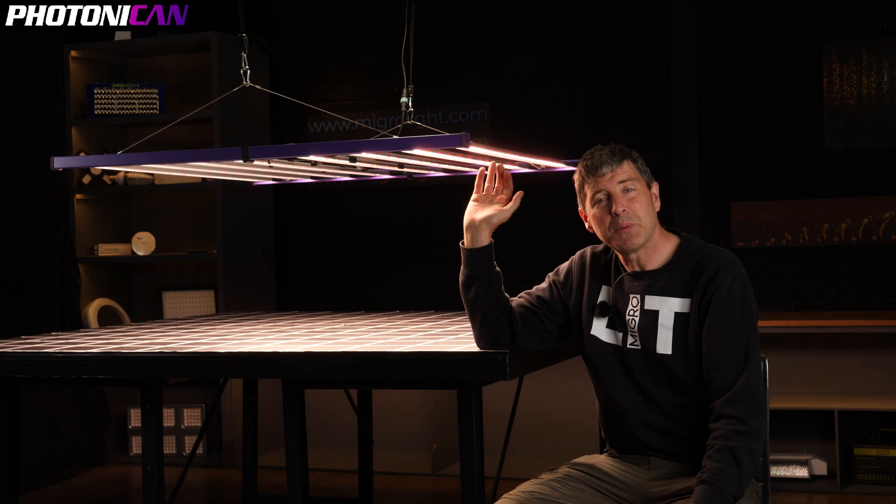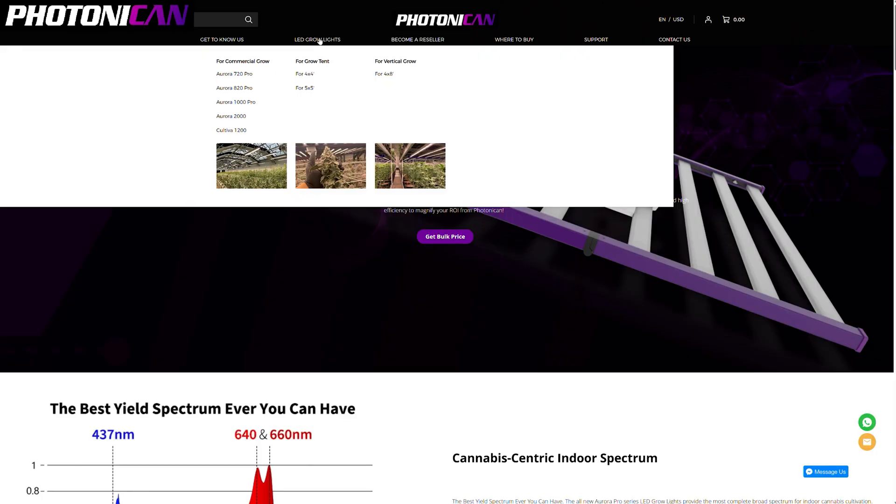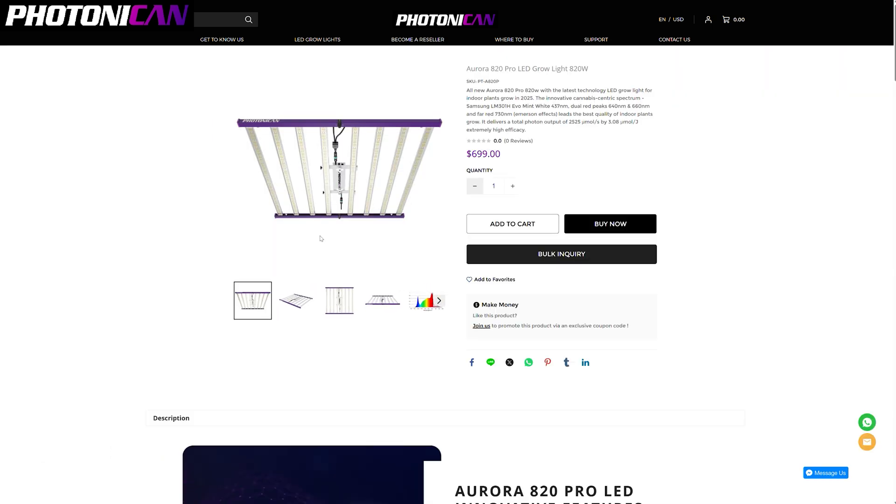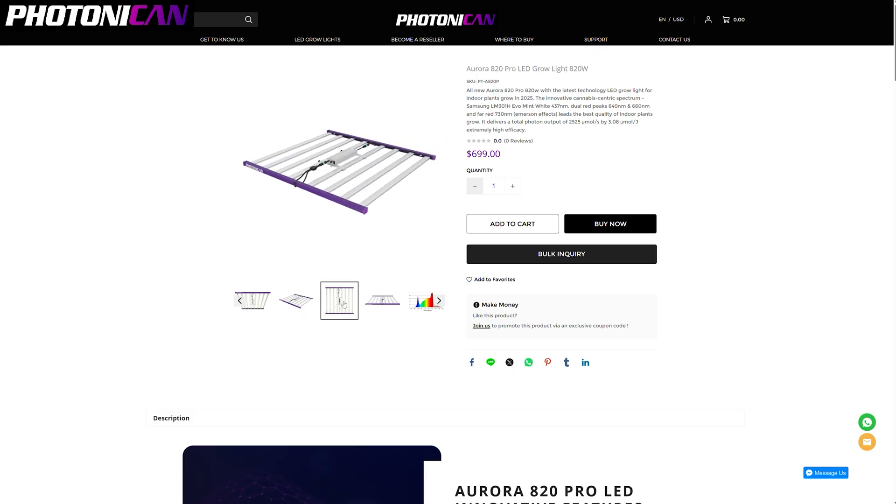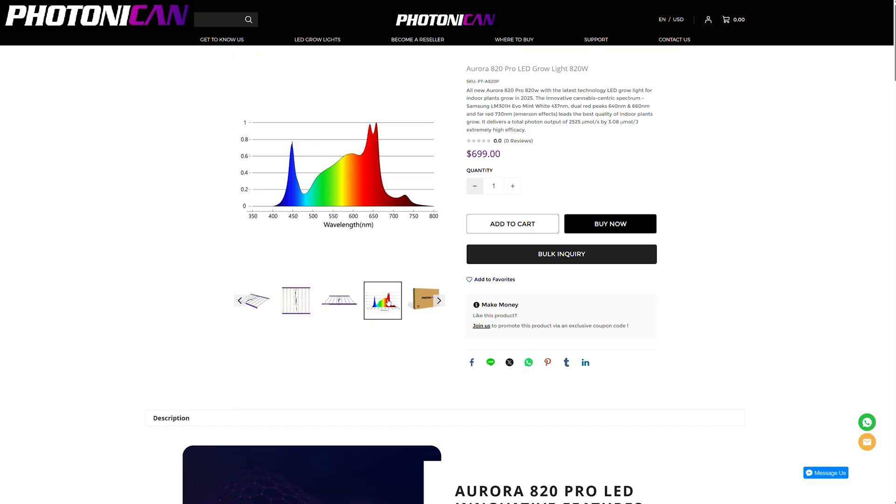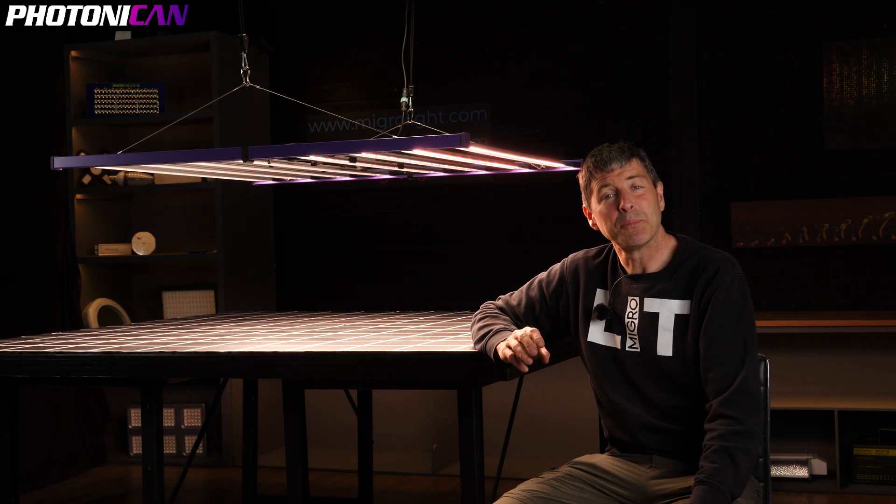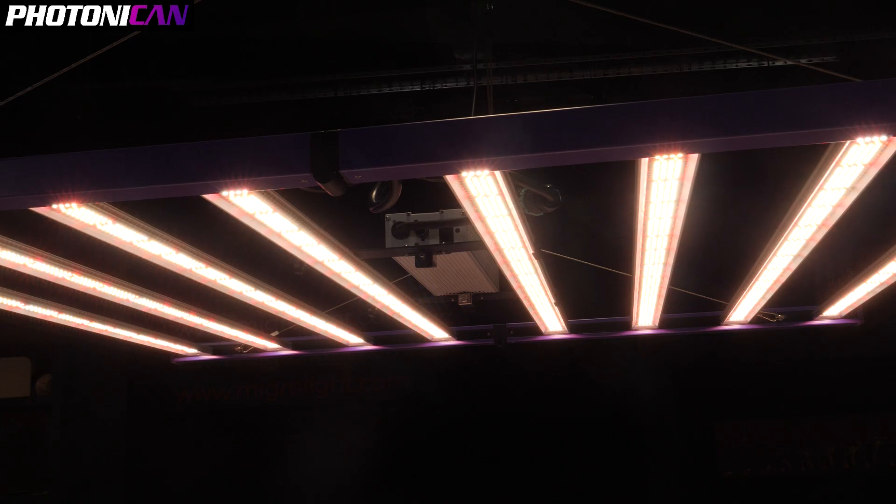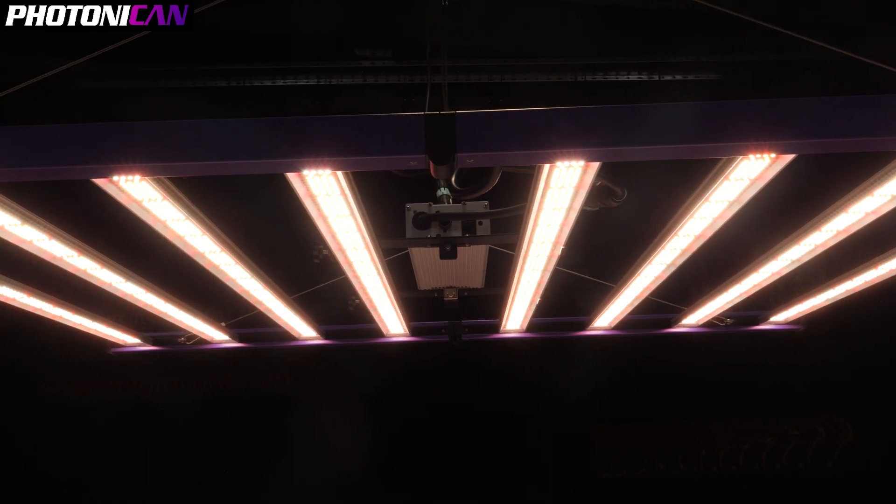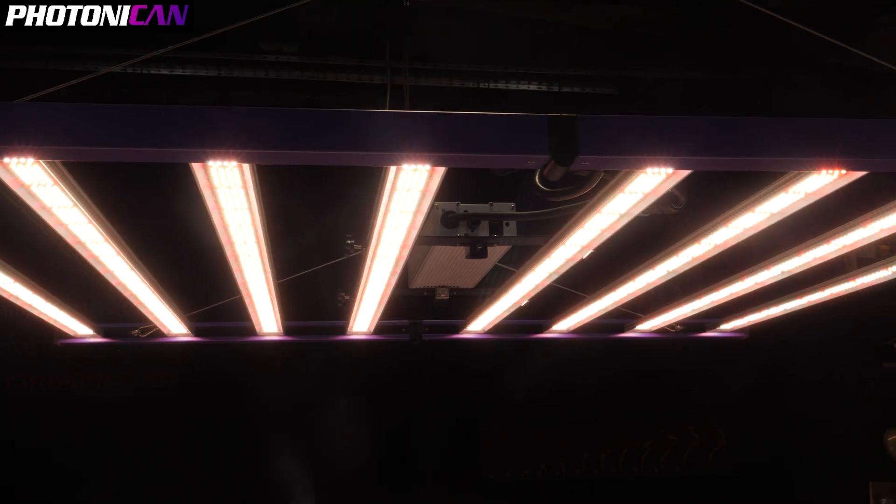The light's available online to purchase directly, and the current price is $699 for an 820 watt light, which is pretty damn good. And of course, you've got this innovation of the dual deep red LEDs, so you're potentially getting an improvement on your yield and an improvement on the quality of your harvest as well with that new spectrum.